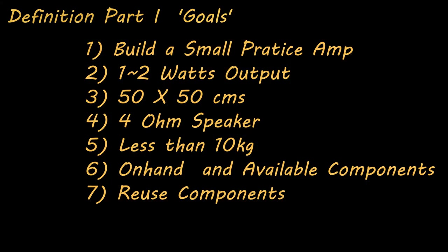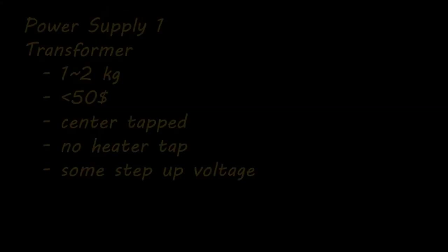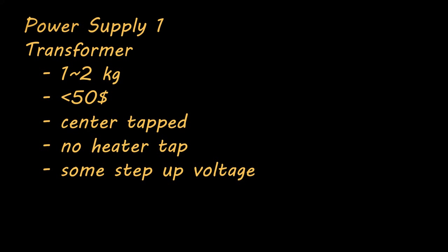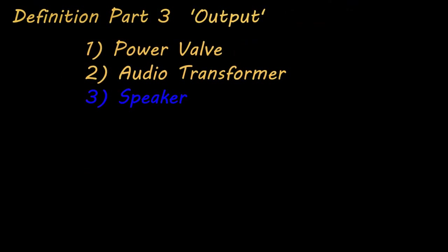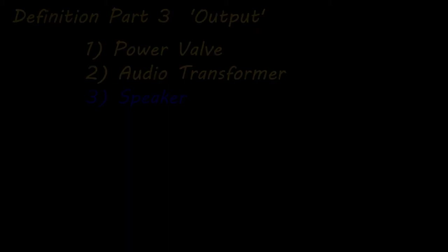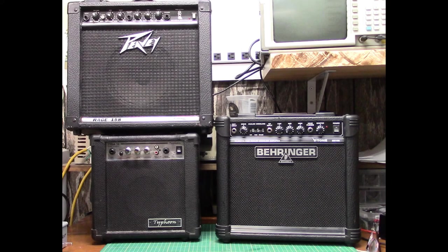So when compiling the initial bill of materials we want to go back to our definitions and pick out those components that can be easily defined. For example the speaker. I won't be making one of those from scratch and I can easily pull one out of one of my donor amps.